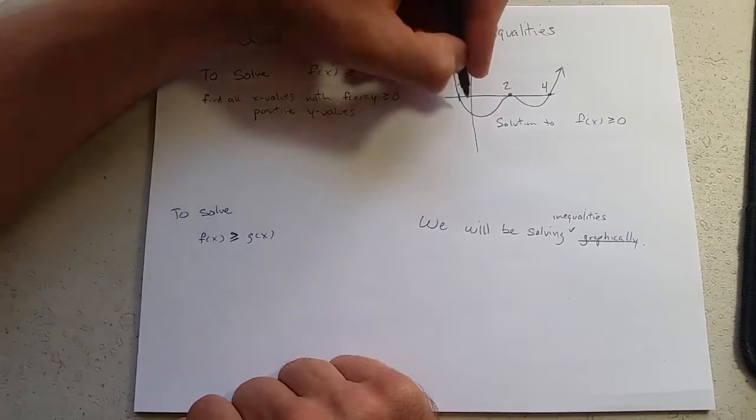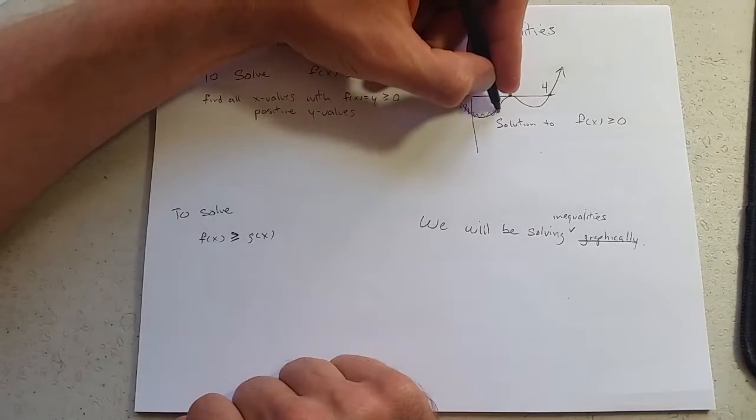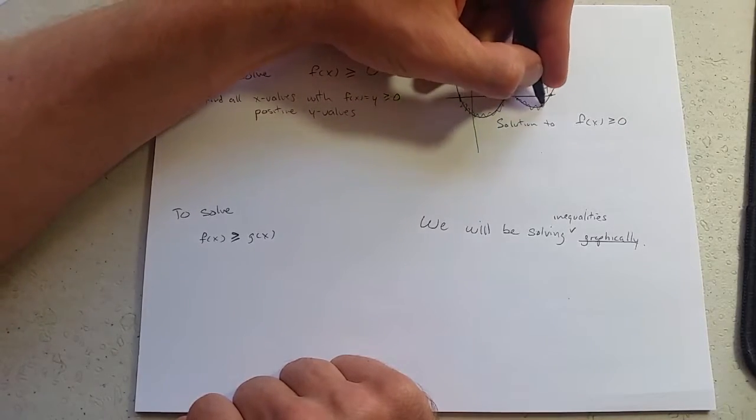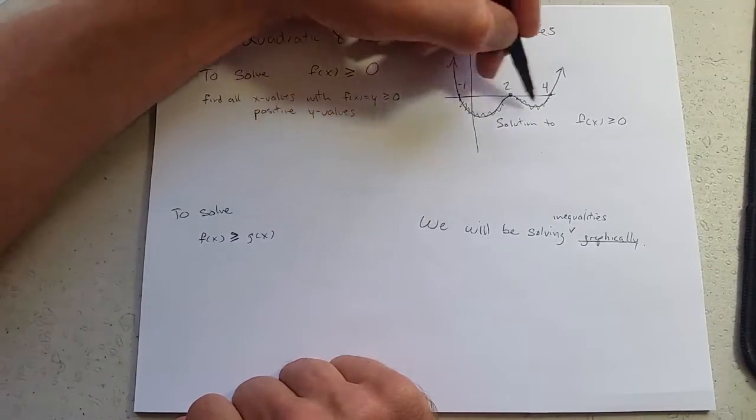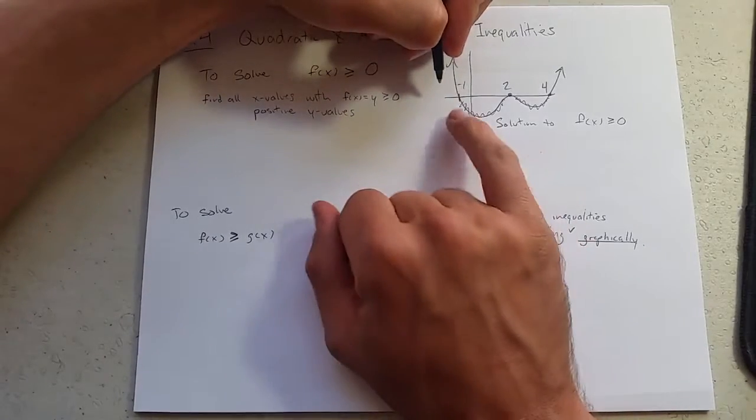So what I like to do is look at the bad parts. So I'm going to scribble out the parts I don't want. These are the two little values here. Those have negative y values. And I want everything else.